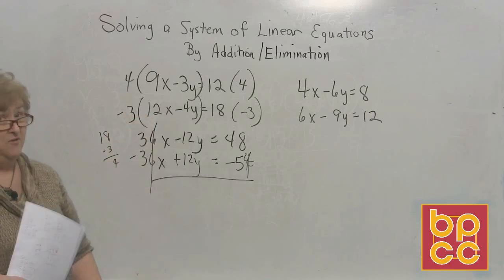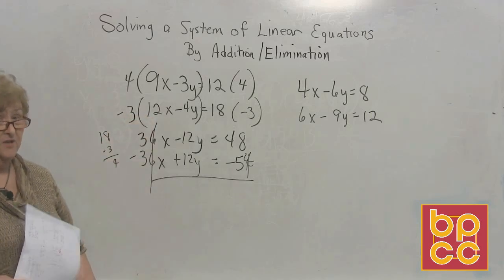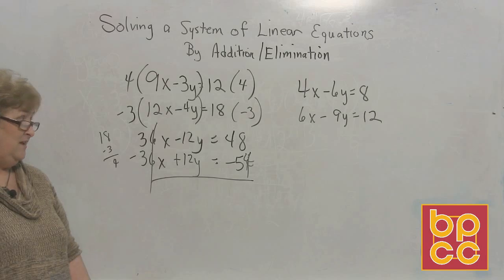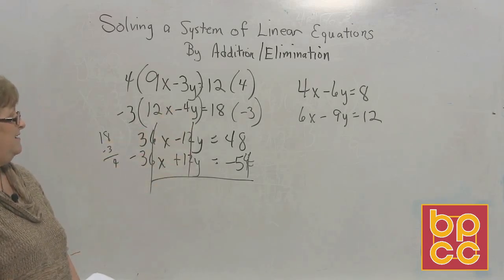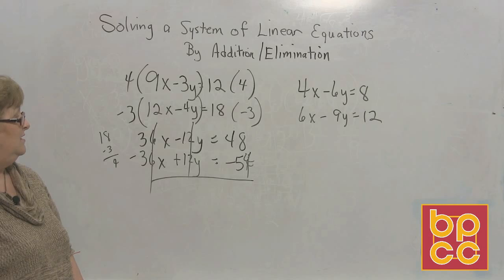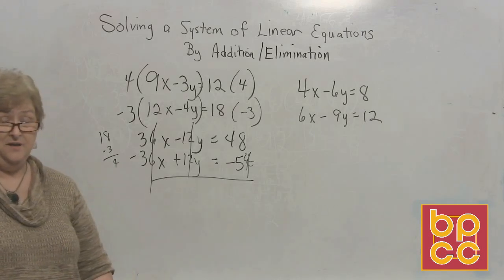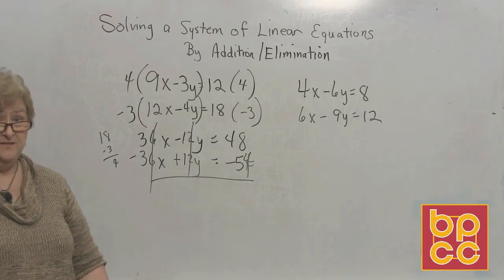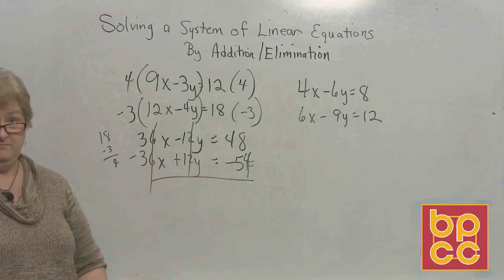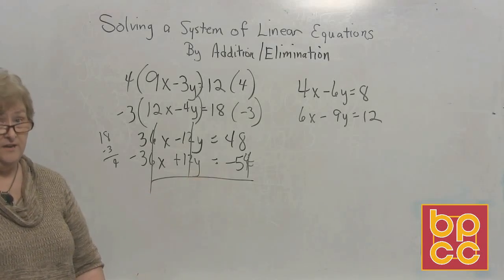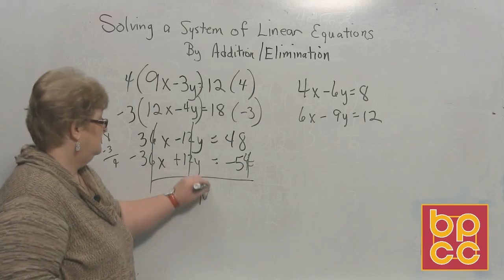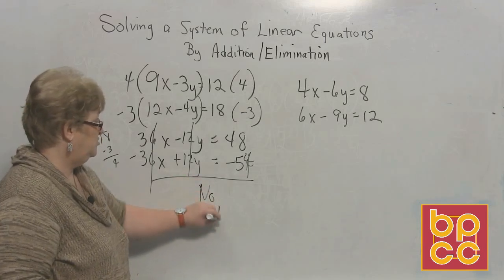But through no fault of our own, that wasn't my plan, it looks like the y's clear out too. Positive 12, negative 12. And I'm left with a 48 and a negative 54. Now I could go ahead and write a number, but it doesn't really matter. I have no x's, I have no y's, and I'm left with some number over here.